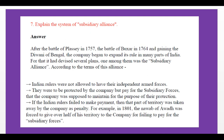For example, in 1801, the Nawab of Awadh was forced to give half of his territory to the company for failing to pay for subsidiary forces. According to the subsidiary alliance system, any kingdom which signed the treaty and failed to pay the subsidiary dues would have a large part of its territory taken as penalty.